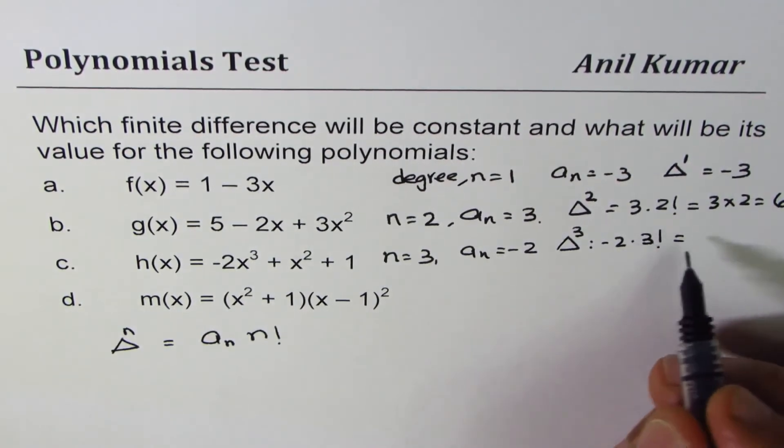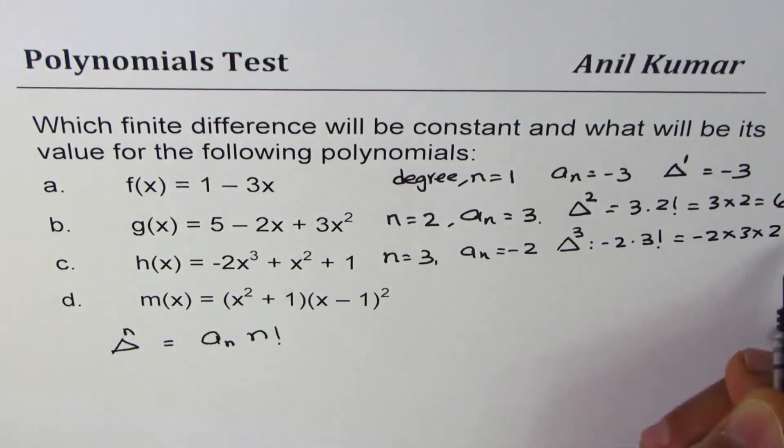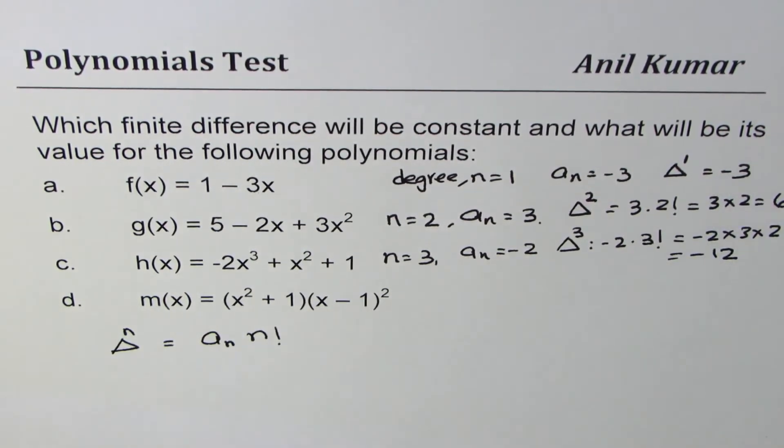3 factorial is 3 times 2 times 1. So we get minus 2 times 3 times 2. You can write times 1. That gives you 6 times 2 as 12. Minus 12 is your answer.